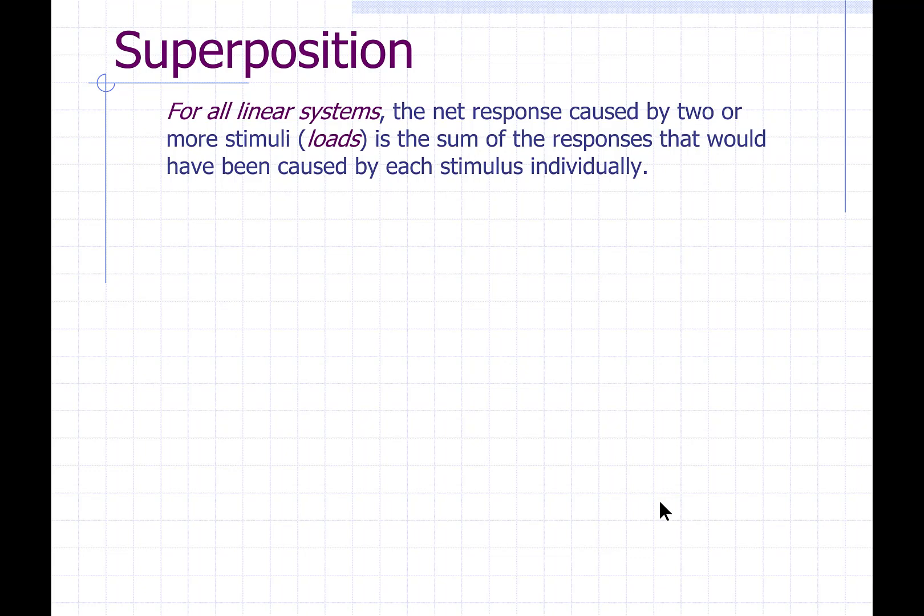What superposition says is that for all linear systems—a very important caveat that this applies only to linear systems—the net response caused by two or more loads is the sum of the responses that would have been caused by each of those loads individually.